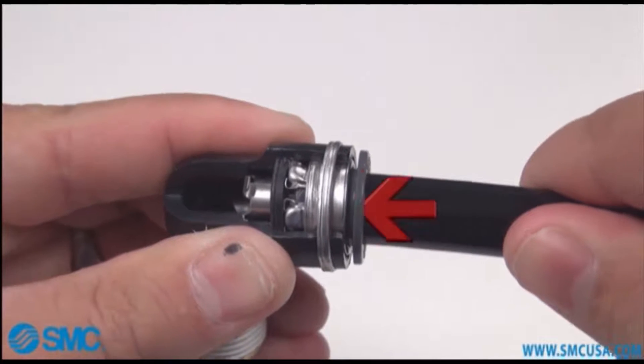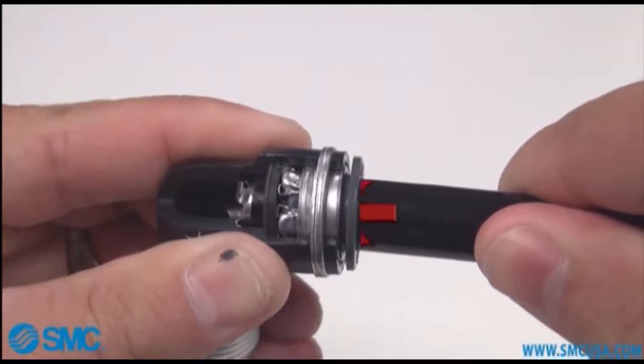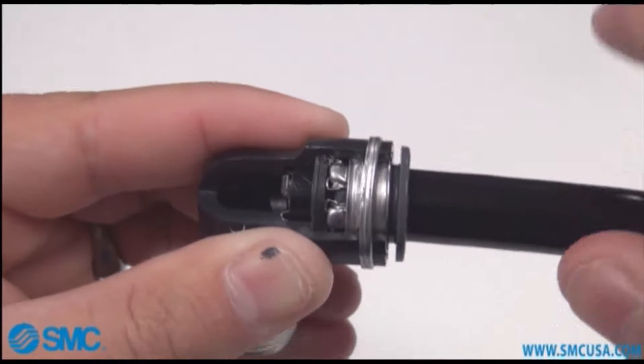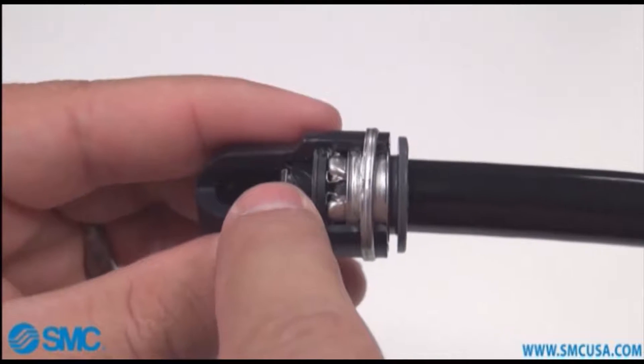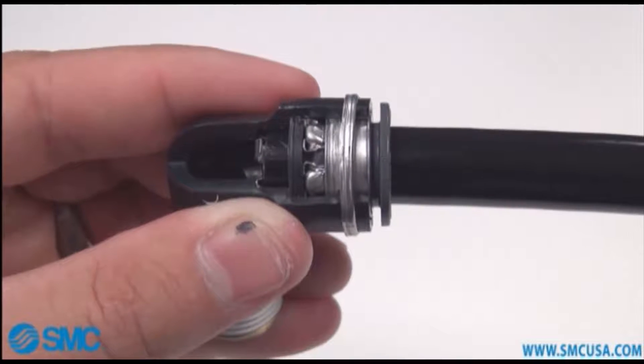Next push the tube again until it comes to a hard stop. As you can see the tube will pass the chuck seal and bottoms out on the tube support.